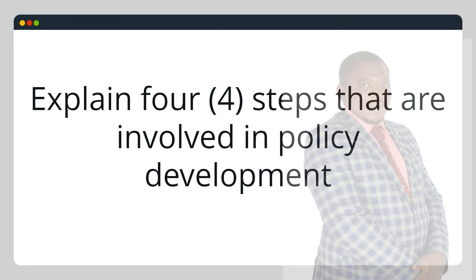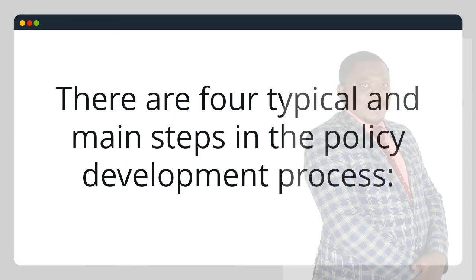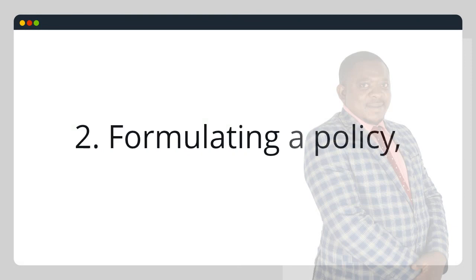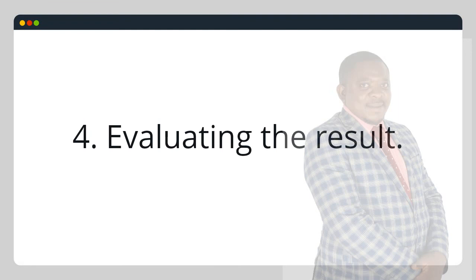Explain the 4 steps involved in policy development. There are 4 typical and main steps in the policy development process: 1. Identifying a Problem, 2. Formulating a Policy, 3. Implementing the Policy Change, 4. Evaluating the Result.